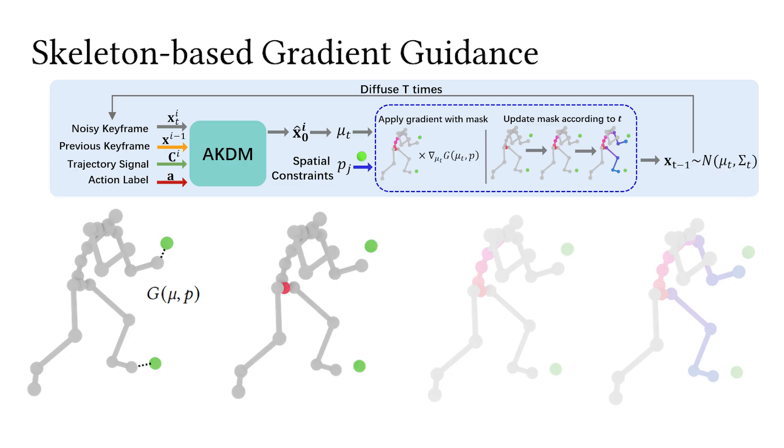The gradient of this function is then propagated to the predicted mean using a gradient mask that selectively masks out parts of the joints. This mask is gradually updated throughout the denoising process according to the skeleton structure, resulting in more natural guidance results.